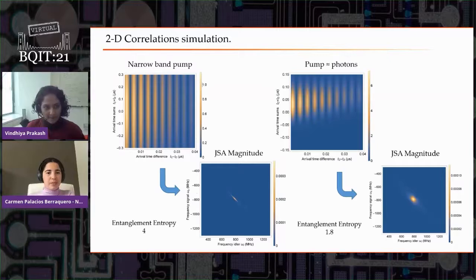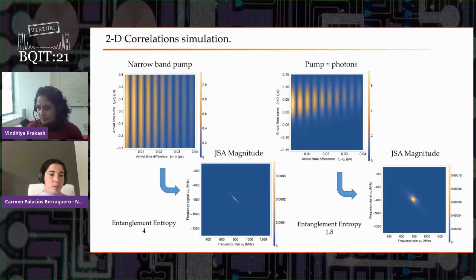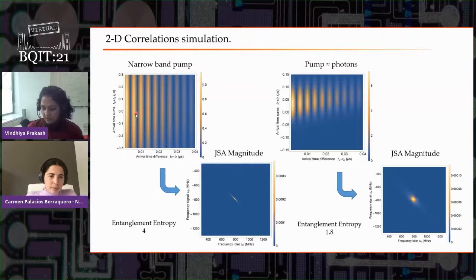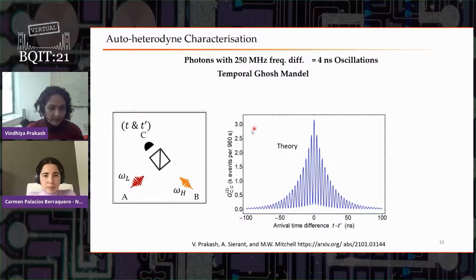Alex Jones and Alex Clark both asked about adding a beam splitter and a detector to one of the channels to get around the dead time for the detectors. That's a very good suggestion. For the temporal Ghosh-Mandel effect, we could have added one more beam splitter and detector to get around the dead time. But the point was to show that with one detector, you can get the same information that you can get with two detectors — requiring fewer components.